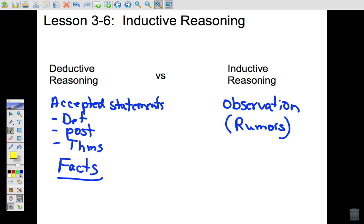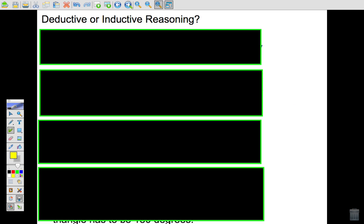So notice the difference between these. And I'm going to highlight this just to emphasize this. With deductive reasoning, it's based on facts or definitions or whatever. With inductive reasoning, it's based on observation, on what we see. So that may be rumors. Now, let's go over some examples of this.